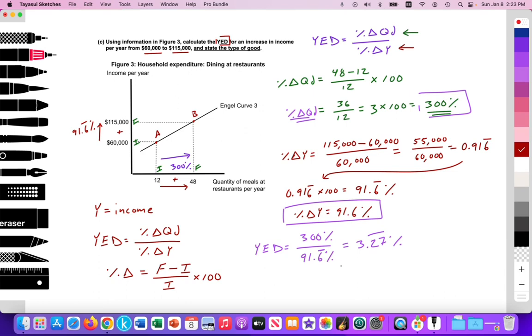So YED equals 3.27 repeating percent. So YED is greater than 1. YED is greater than 1. So that means it's a normal good that is a luxury. So what type of good is it? It's a normal good that is a luxury.